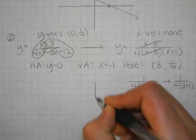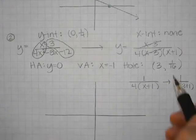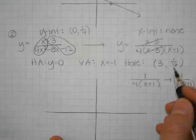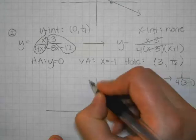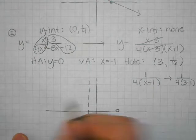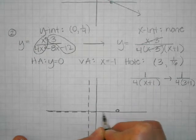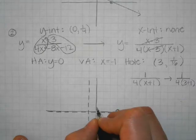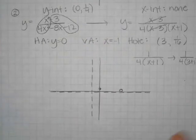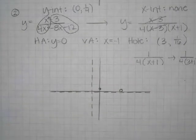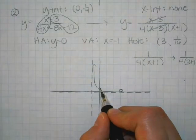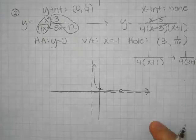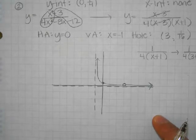So let's go ahead and graph what we have. We have a hole at 3, and 1 sixteenth is basically a very small fraction, just close to zero — I'm going to put the hole just above the line right there. We've got a vertical asymptote at negative 1 and a horizontal asymptote at 0. We have a y-intercept at 1 fourth. This is enough information to draw at least part of the graph — we know curves get really close to their asymptotes. I know the curve goes through the hole down here and just gets closer and closer to that asymptote.